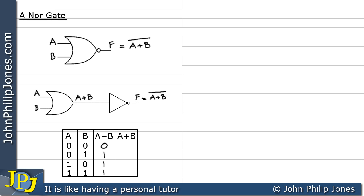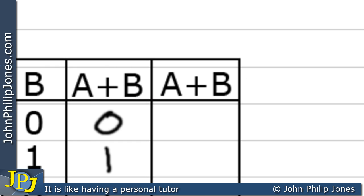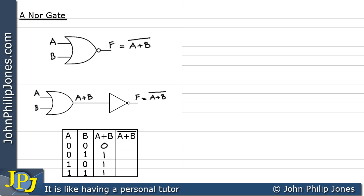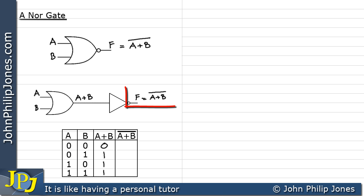Now the next column, as you can see here, I've labelled as A or B. But in fact, this particular column, I'm going to actually NOT. And this represents the output at this particular position. Now of course, this will be the NOTting of this column.